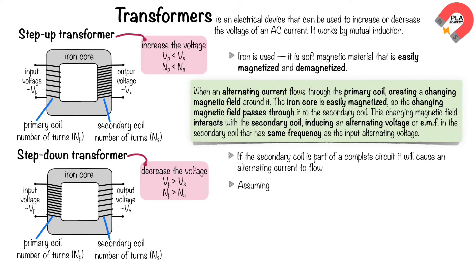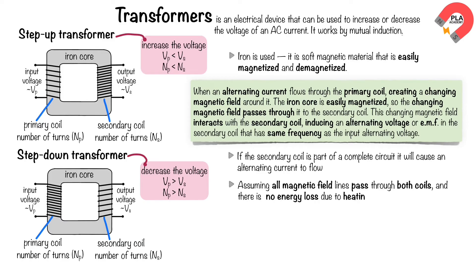Assuming all magnetic field lines pass through both coils and there is no energy lost due to heating effects, the following equations apply. Vp is the voltage in the primary coil, and Vs is the voltage in the secondary coil.